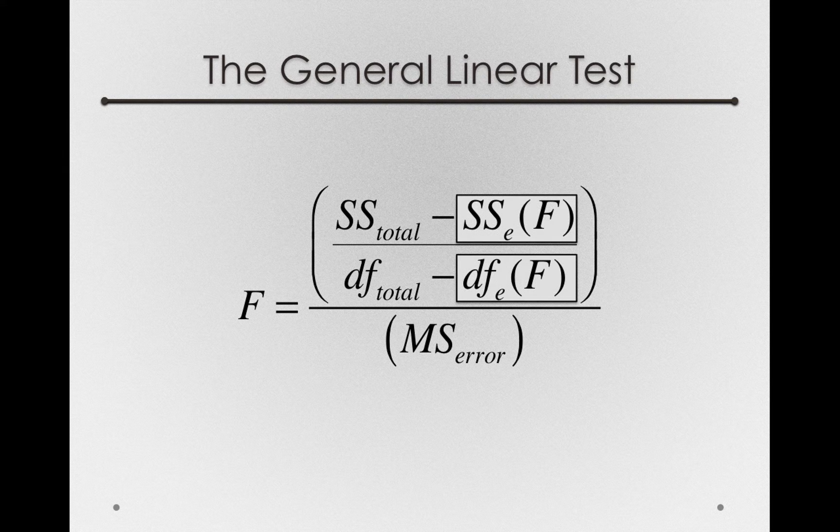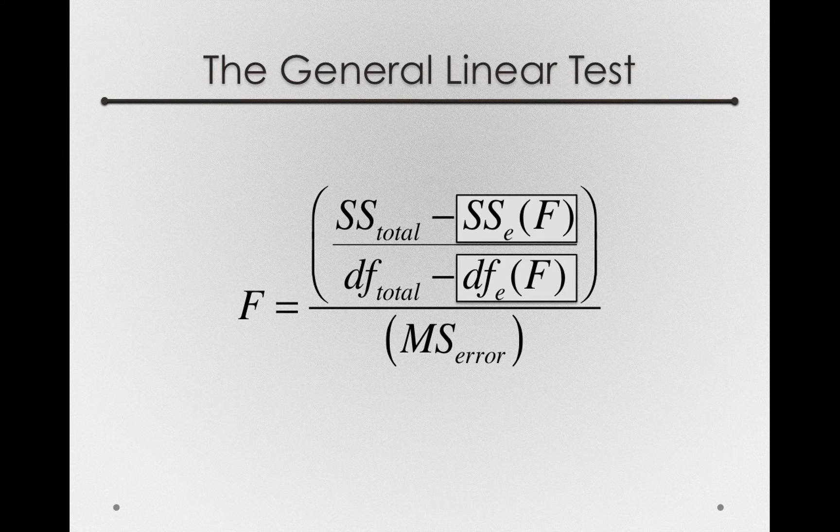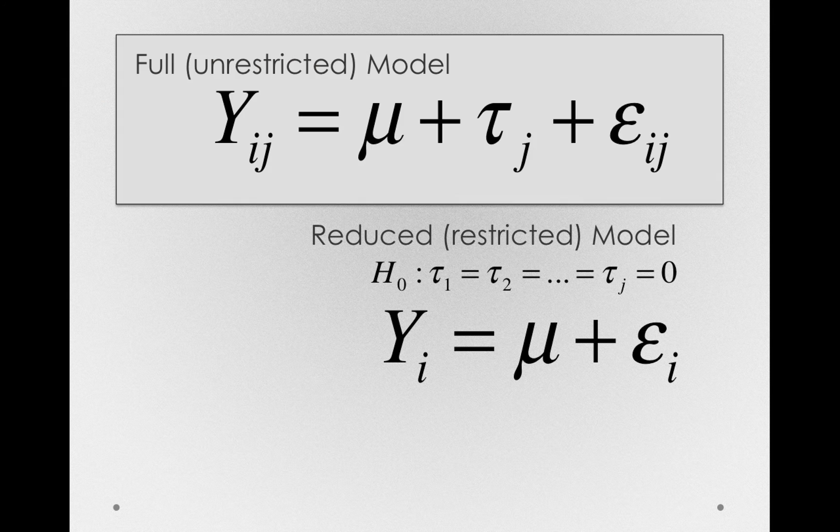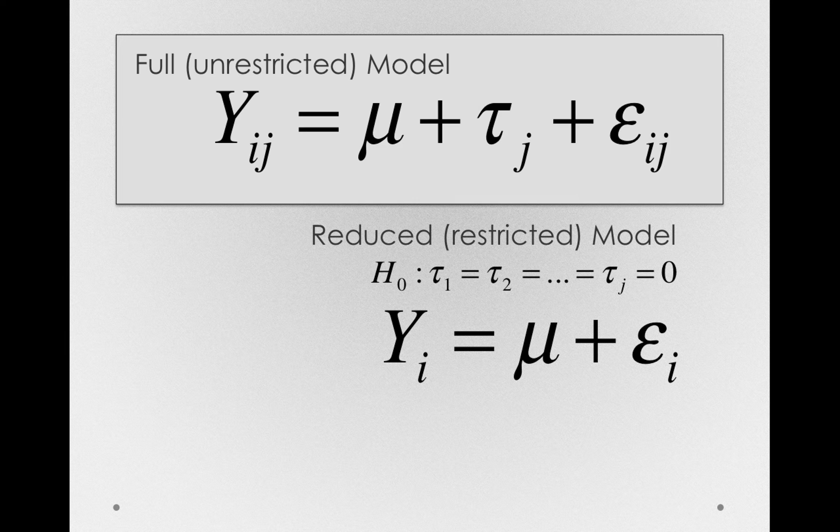We have one final component to go, the sums of squares error for the full model and the degrees of freedom error for the full model. Well, remember, our full model is the model in which we're fitting taus. And so we're removing the treatment offsets from that error term.